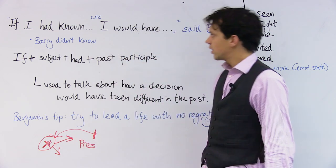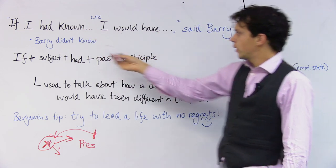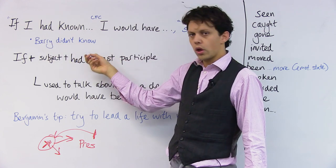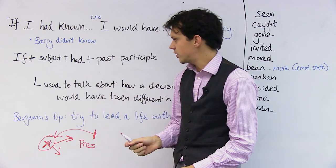So he didn't. He did something else. If I had known, I would have done something else. So at that time, Barry did not know that Chelsea were playing at home, so he made a different decision.